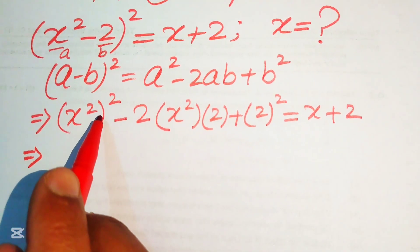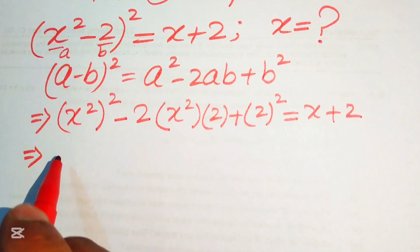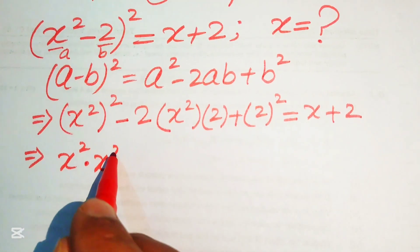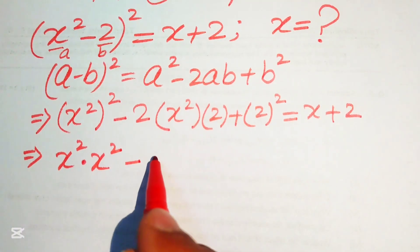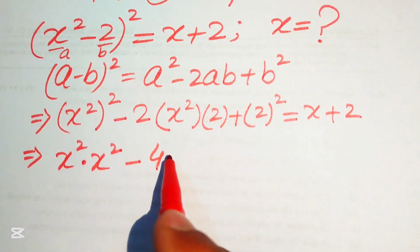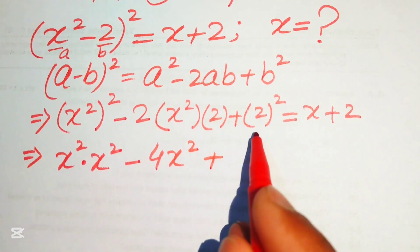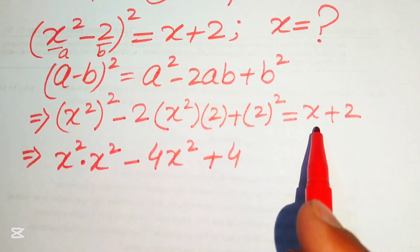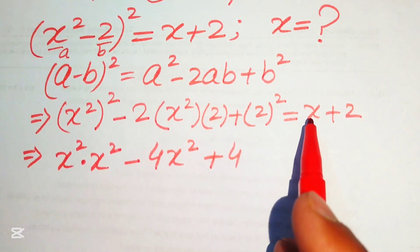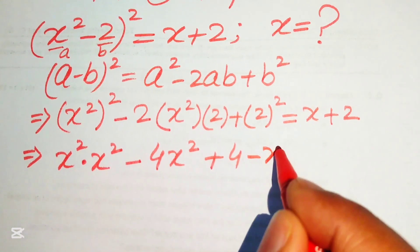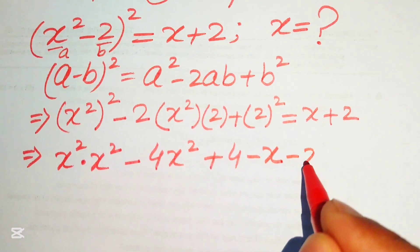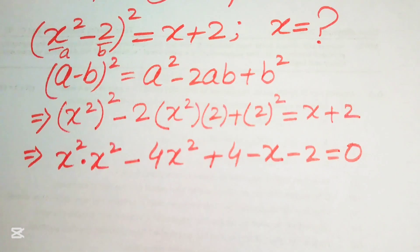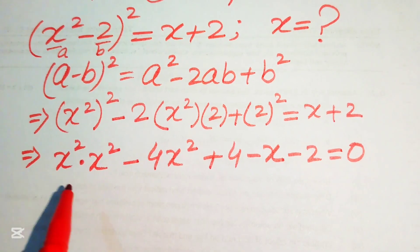We simplify: (x²)² becomes x⁴, and 2 times 2 becomes 4, so we have x⁴ - 4x² + 4 = x + 2. Moving the right-hand side terms over, we get x⁴ - 4x² - x + 2 = 0.